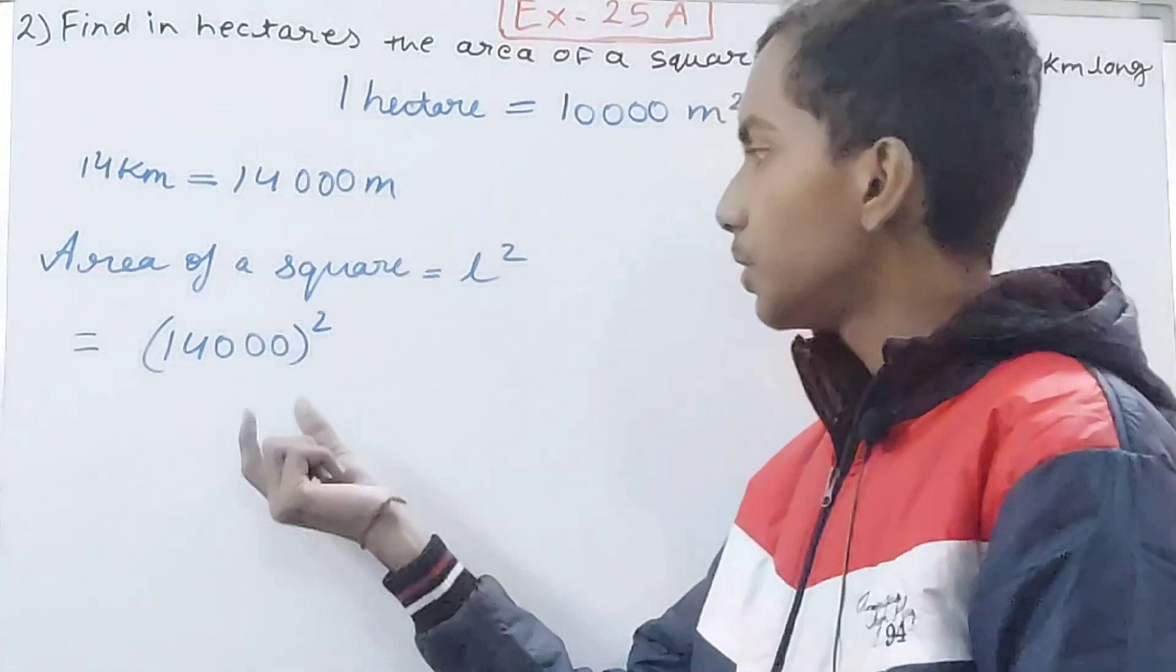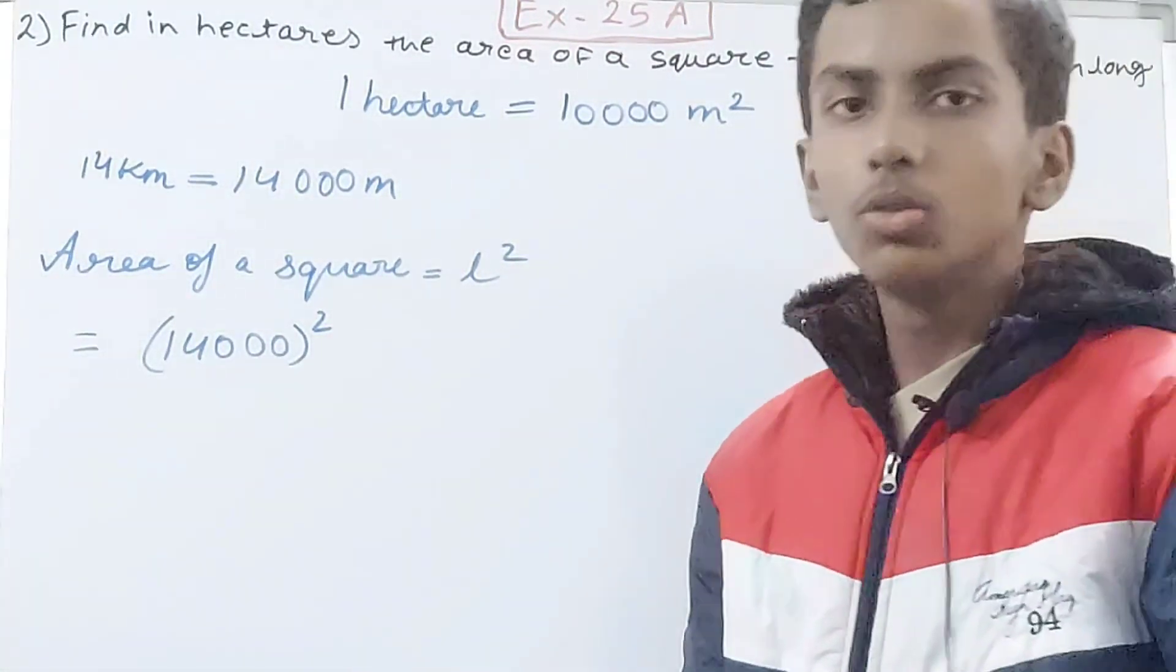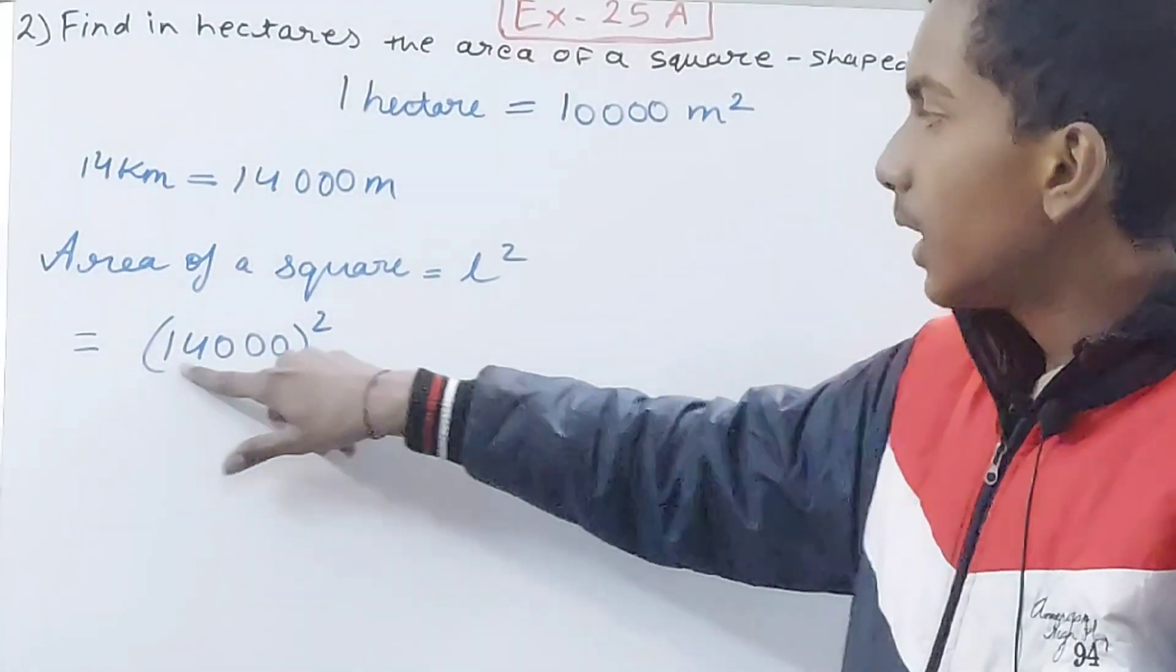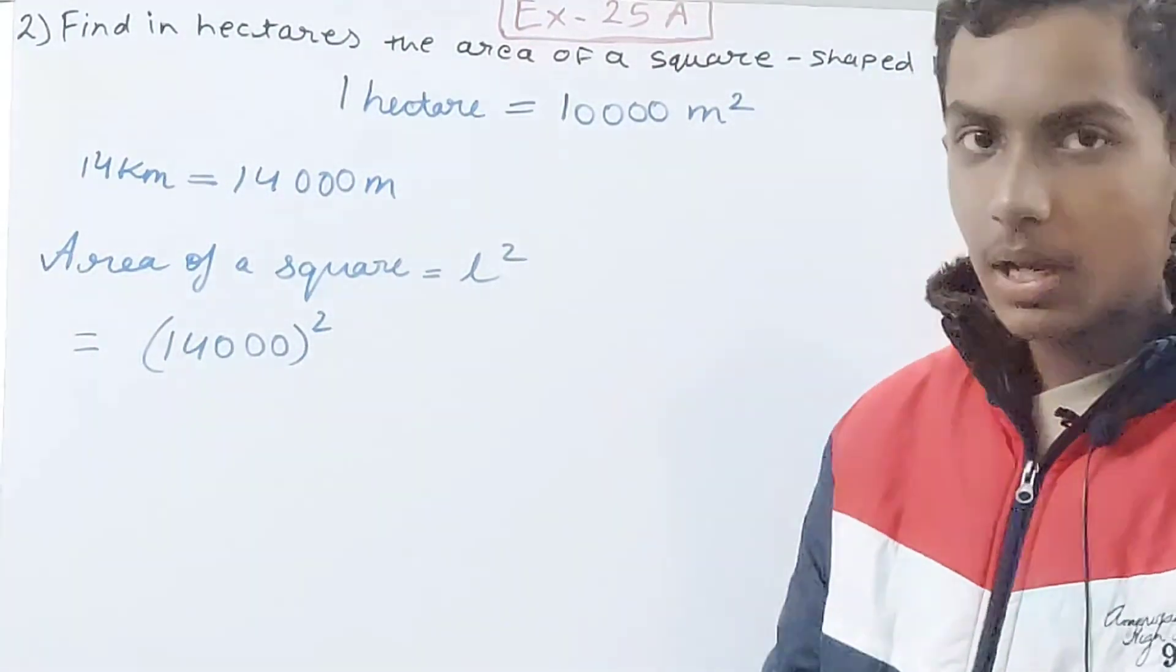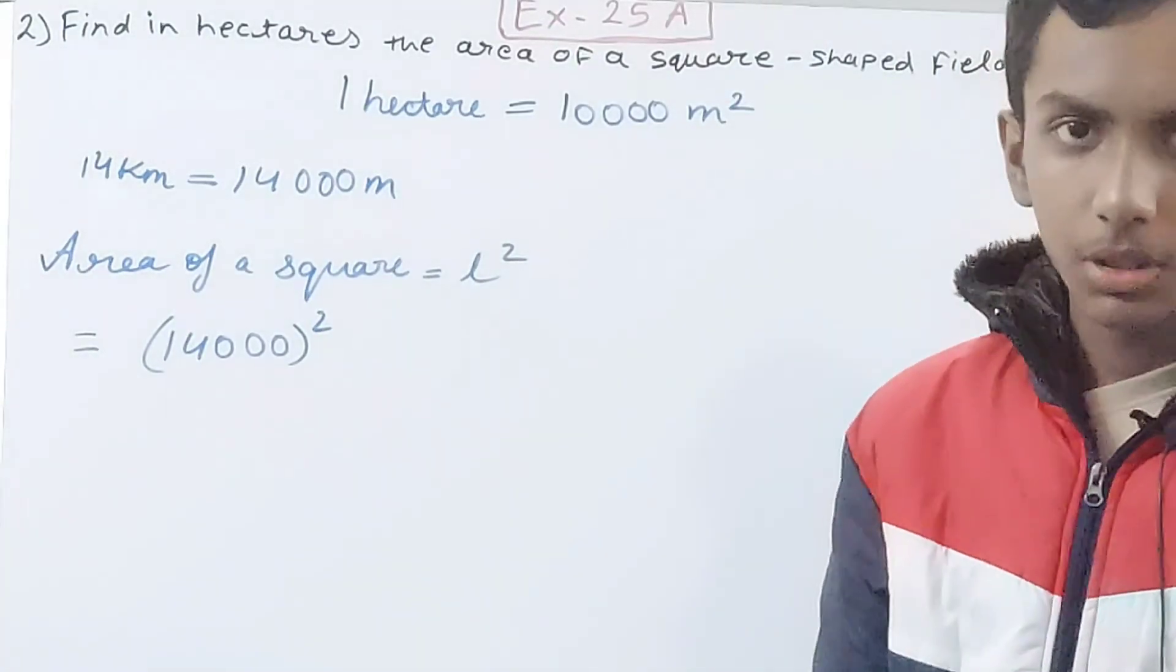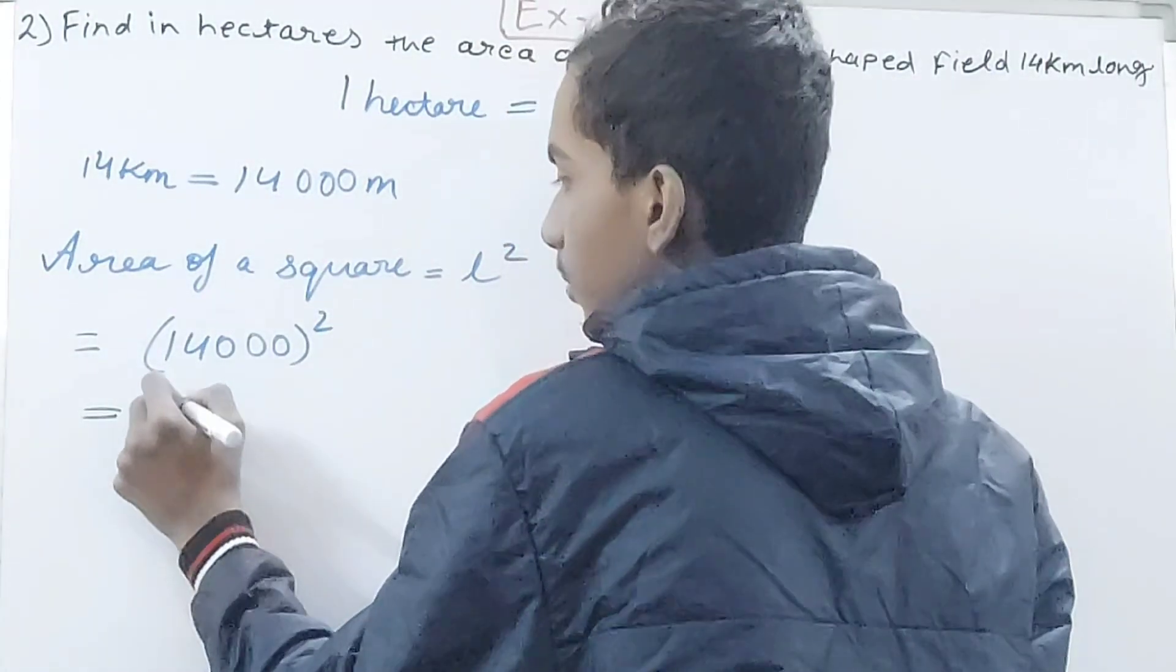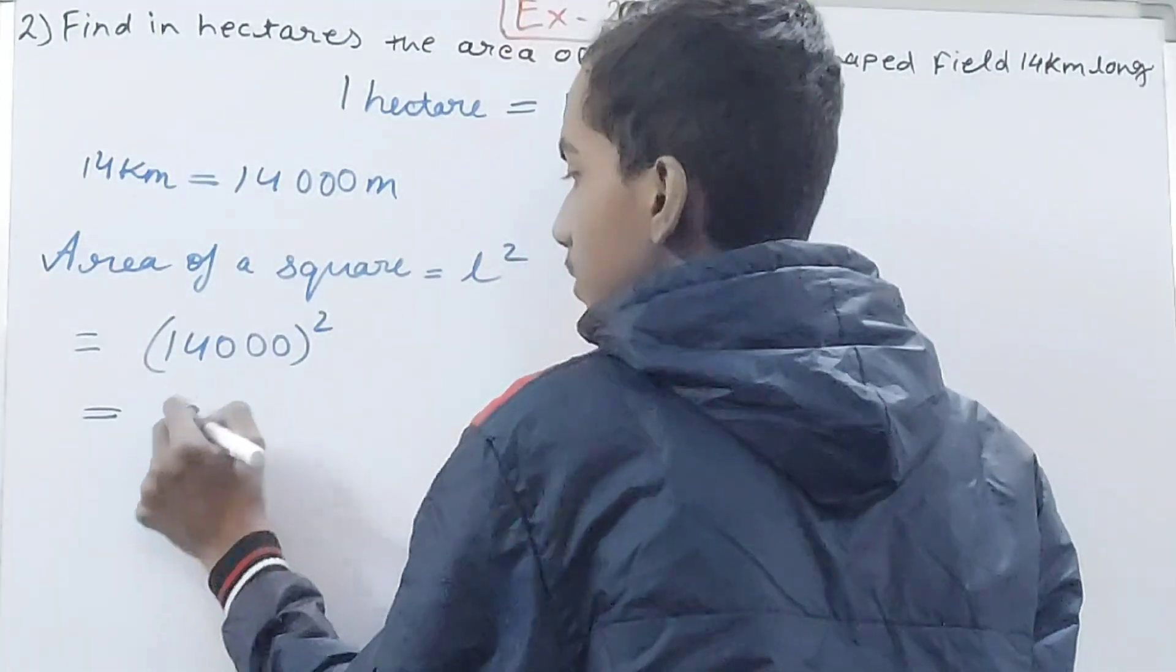In place of L you will write down 14,000 whole squared. This is the area of a square. Now you can see 14,000 is there, so you don't need to do the entire multiplication. Just see, first of all square these two numbers that are there, one and four. Leave the zeros.